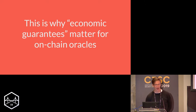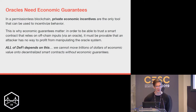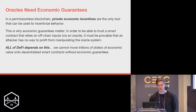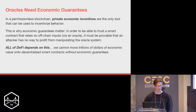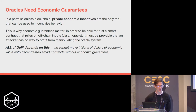This is why we need economic guarantees for on-chain oracles. Formally: we have a permissionless blockchain environment where the only tool we have to motivate people are private economic incentives. For us to trust a smart contract that relies on off-chain inputs via an oracle, we have to prove that an attacker has no way to profit from manipulating the oracle. DeFi ultimately depends on this — if we want trillions of dollars on decentralized financial systems, there are trillions of incentives to bribe the oracles.